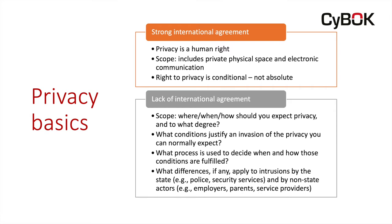There are a number of significant issues where there is a lack of agreement among and between states about privacy. First, with respect to scope: where, when, and how do you have an expectation of privacy? Secondly, what conditions justify an invasion of the privacy you would normally expect? The right to privacy is conditional, so what are the conditions that justify an invasion? Third, what process is used to decide when and how those conditions are fulfilled — will it be a judicial process, an executive process, formal, informal, levels of review? No international agreement on that.